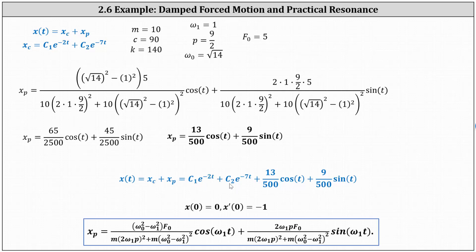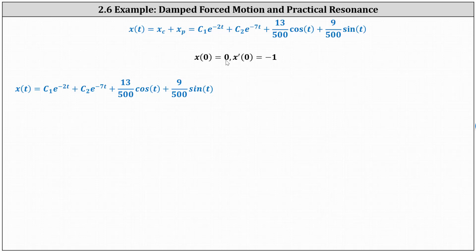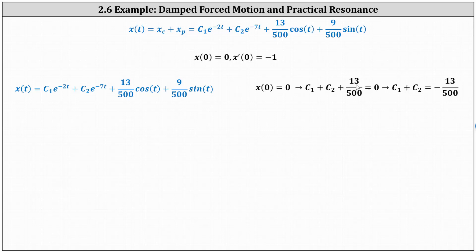The last step is to determine c₁ and c₂ using the initial conditions. Using x(0) = 0, we substitute zero for t and set the function equal to zero. When t = 0, e^0 = 1, so we get c₁ + c₂ + 13/500 cos 0 = c₁ + c₂ + 13/500 = 0, since sine zero is zero. Subtracting 13/500 from both sides gives c₁ + c₂ = -13/500. The next step is to find x'(t) so we can apply the initial condition x'(0) = -1, giving us a second equation in c₁ and c₂.